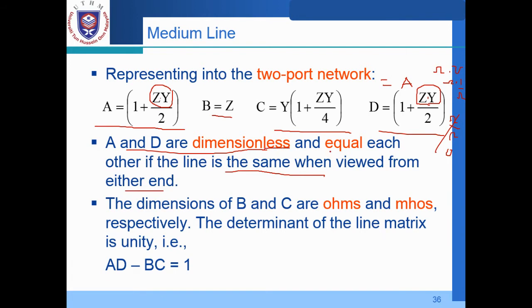If the line is the same when viewed from either end, so regardless where you view the line from, either sending or receiving end. So the dimensionless are still dimensionless. And they are equal in equation. So the dimension B and C are Ohms and mhos. Yes. This is Ohm Z. So this is C. This is mho. So mho because this has been cancelled out each other but you still have Y as the unit or the dimension. So you have mho over here, still remaining. And this is obviously Ohm.